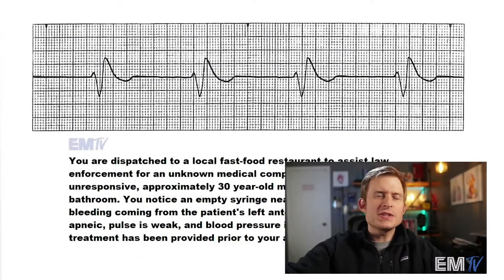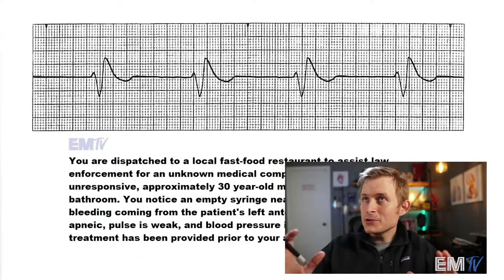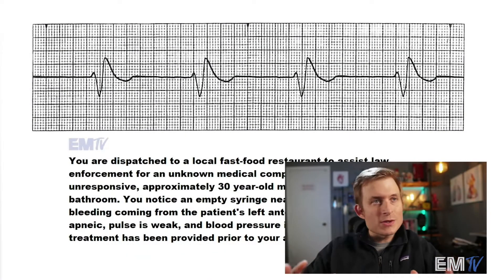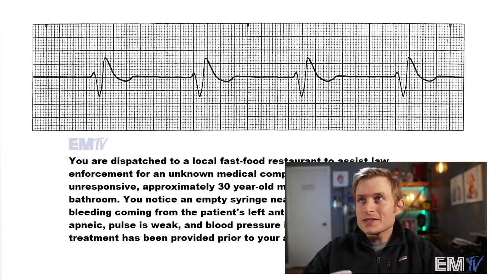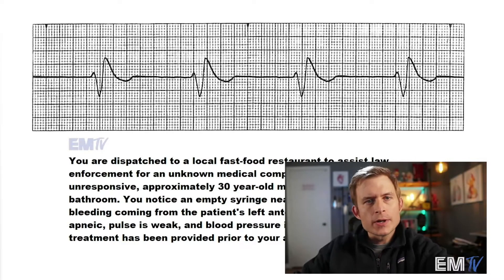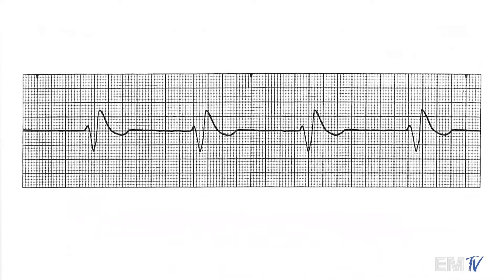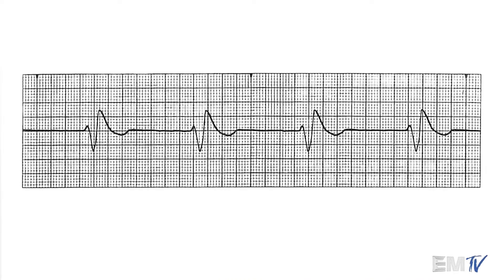So this rhythm is actually deceptively tricky. Let's take a look at it and examine it in closer detail and we'll see if you got it right. First thing you're going to notice here is how slow this is. There are only four QRS complexes here across the six second strip, so this is about 40 beats per minute.